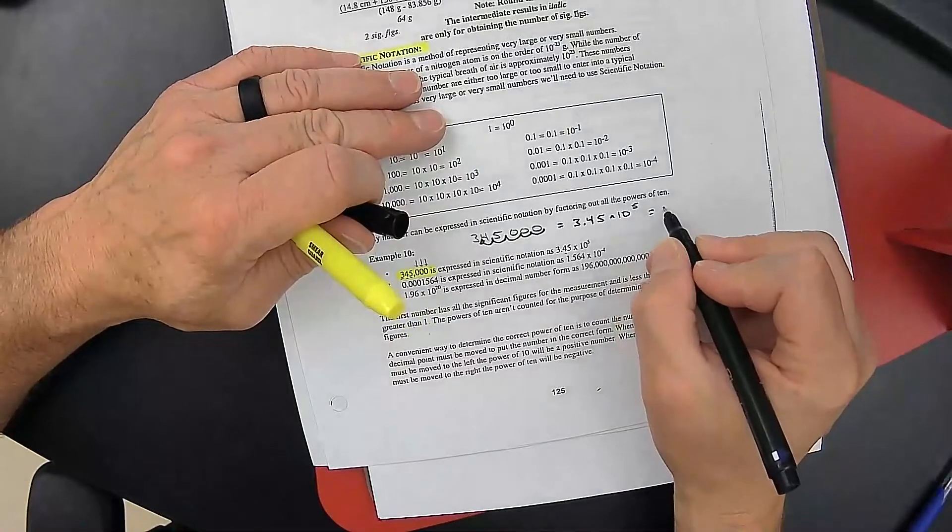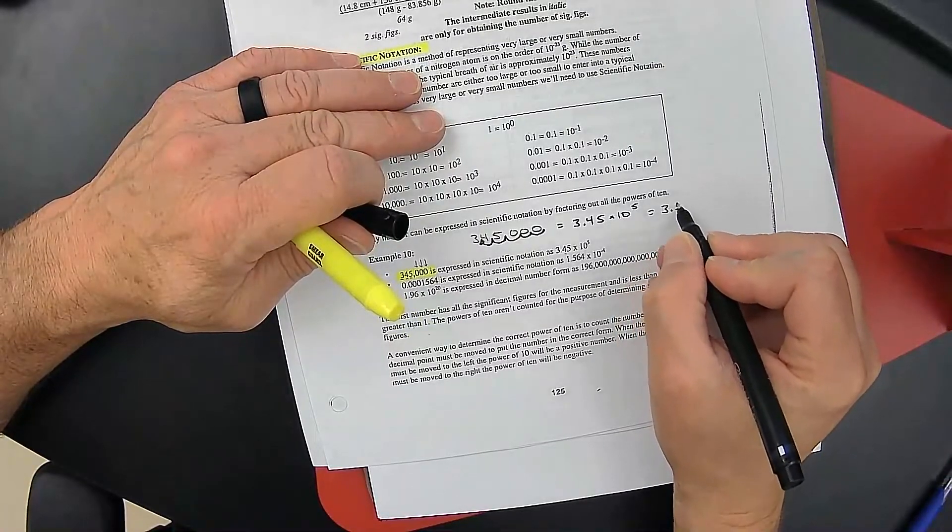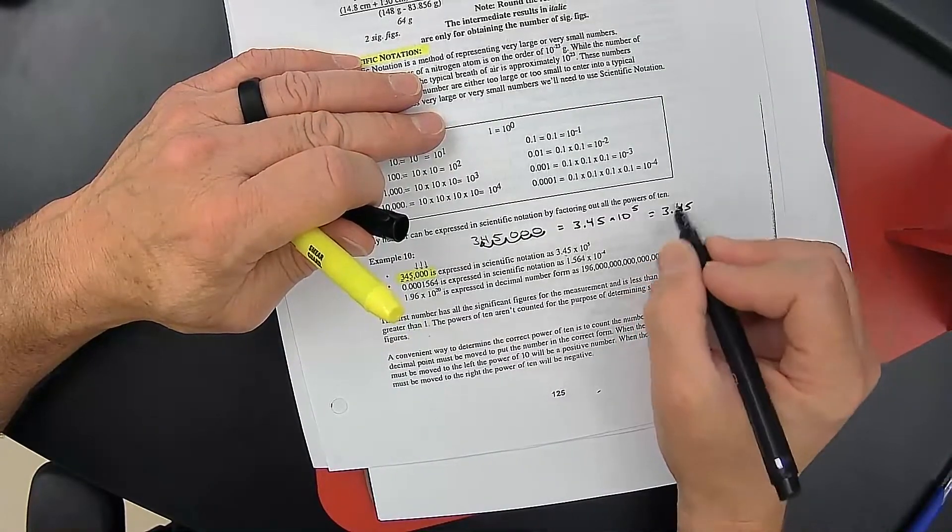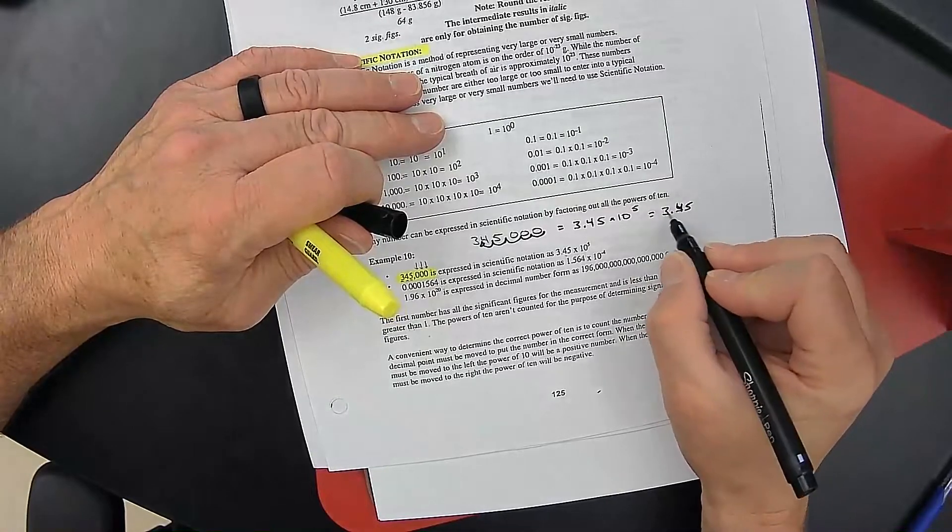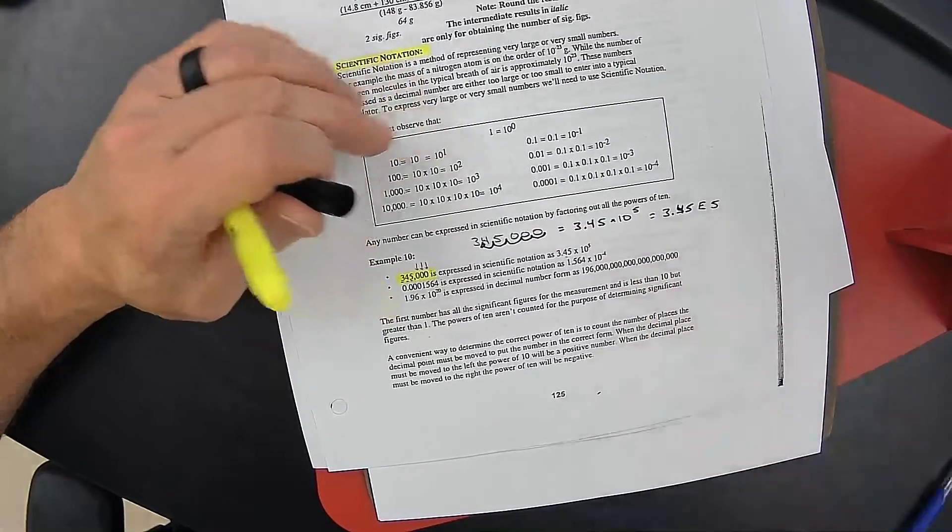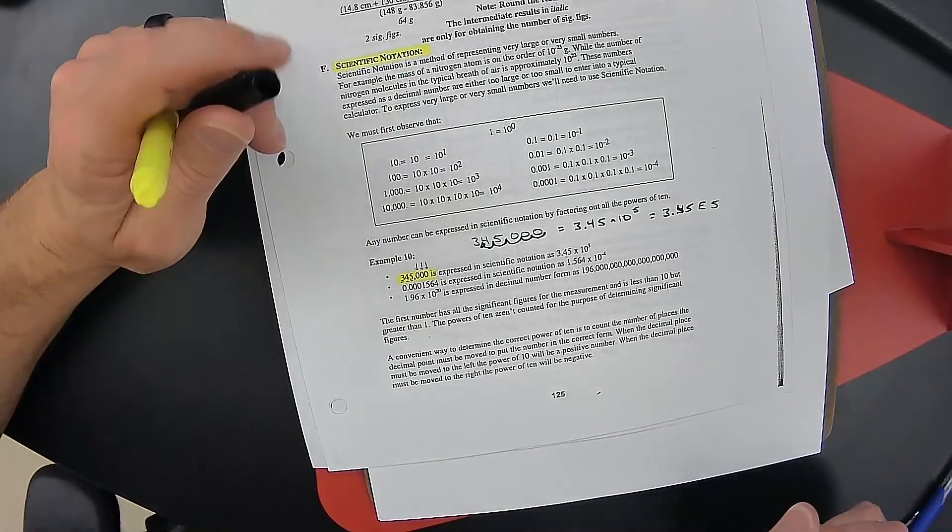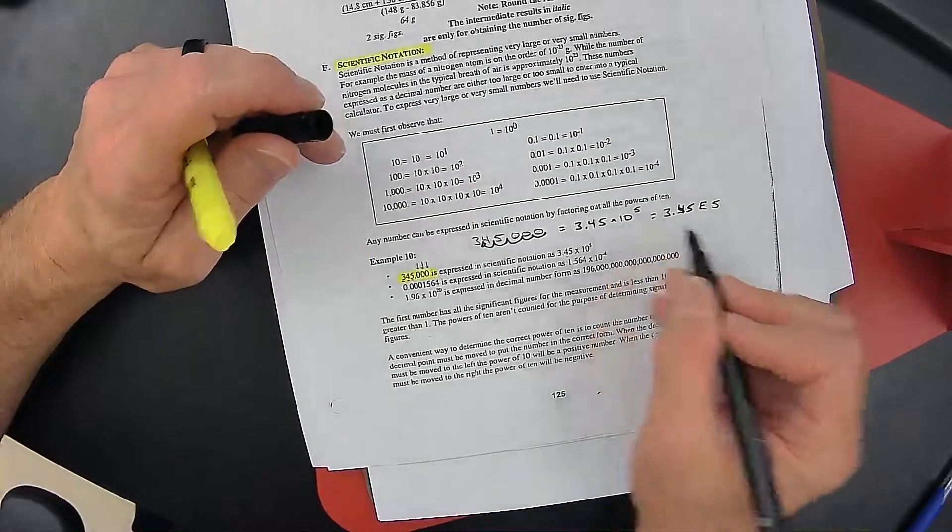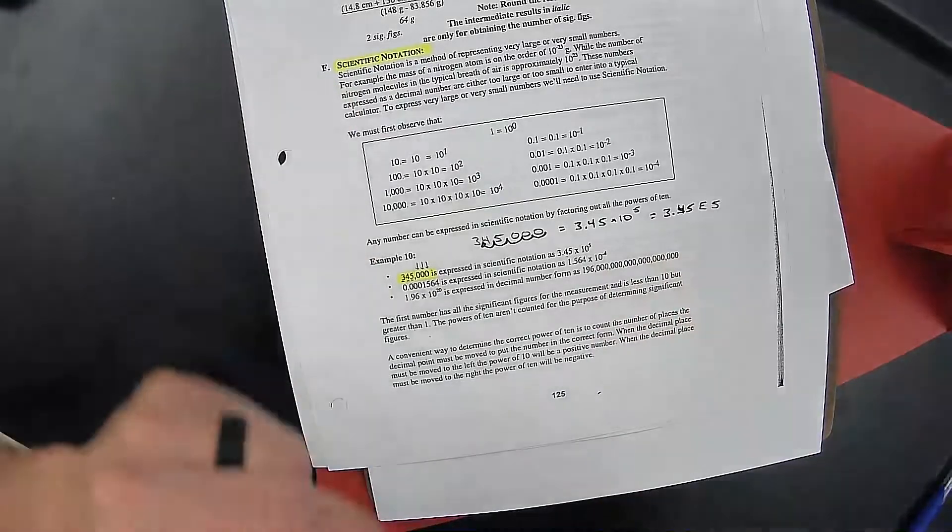Another way that I prefer to write this is 3.45 capital E to the fifth and it means exactly the same thing: times 10 to the fifth or capital E to the fifth. They mean the same thing.